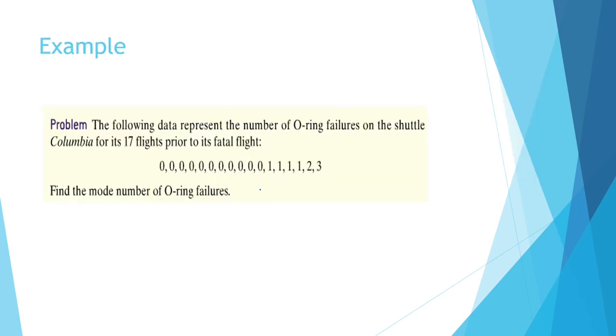Example, the following data represents the number of o-ring failures on the shuttle Columbia for its 17 flights prior to its fatal flight. Find the mode of o-ring failures. The mode is clearly zero because that's the most common repeating data value. So the mode is zero.